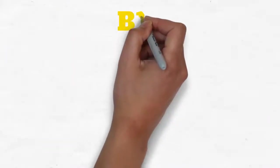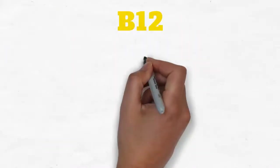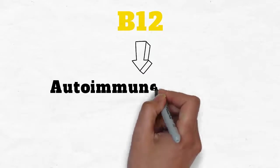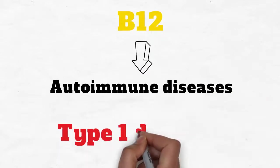B12. Vitamin B12 deficiency is also associated with autoimmune diseases such as type 1 diabetes.